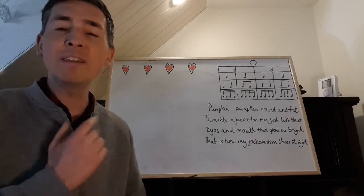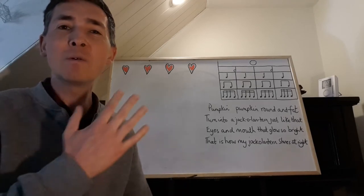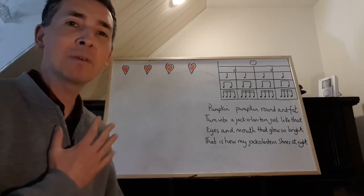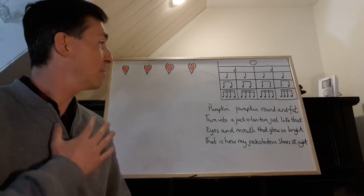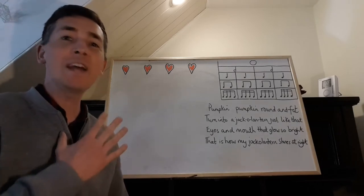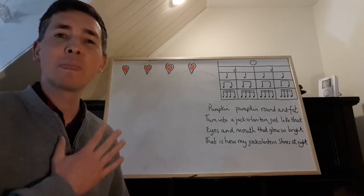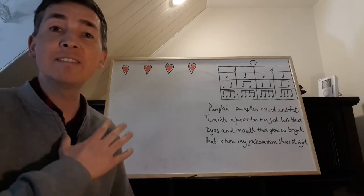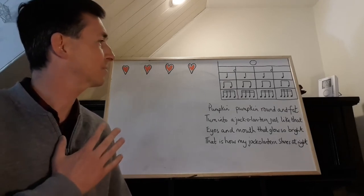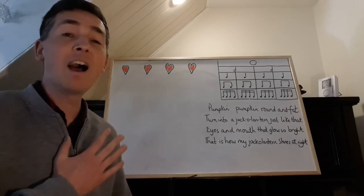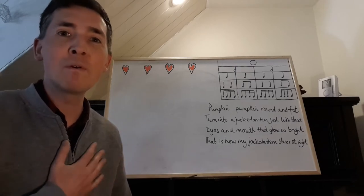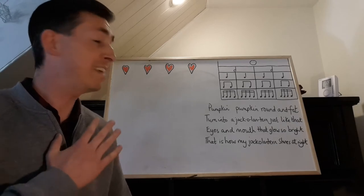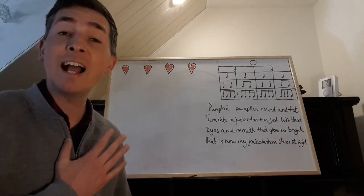We're going to do the same thing again, but this time my turn then your turn. I want you to feel the pulse but say the line back in the gap that I'm going to give you. Pumpkin, pumpkin, round and fat — turn into a jack-o'-lantern just like that. Eyes and mouth that glow so bright — that is how my jack-o'-lantern shines at night.